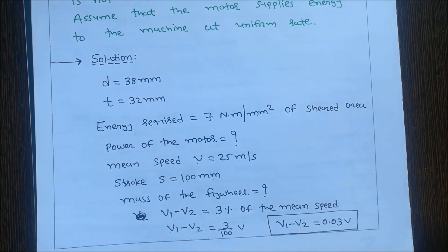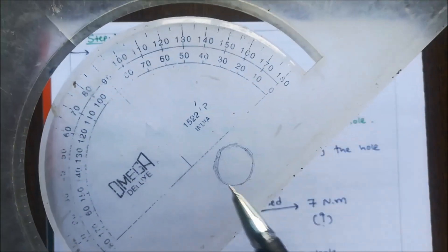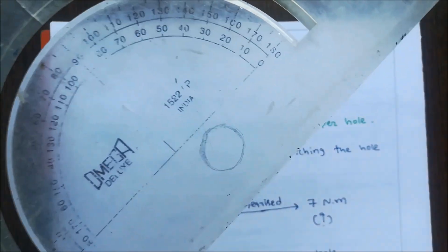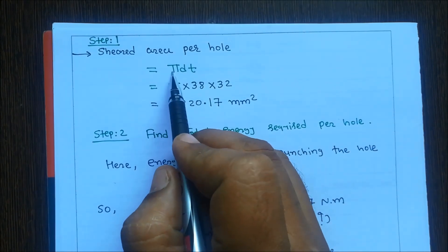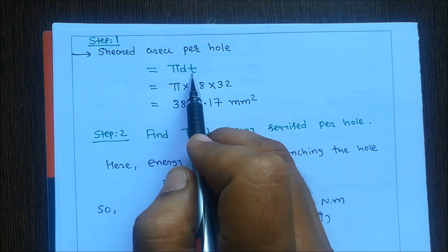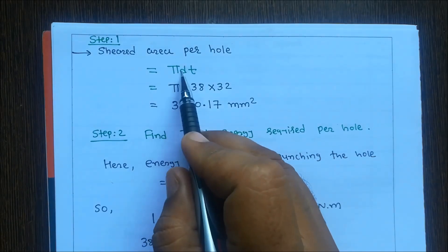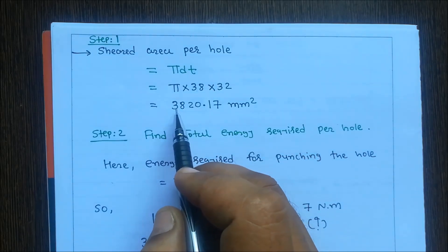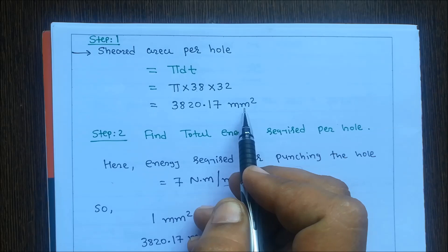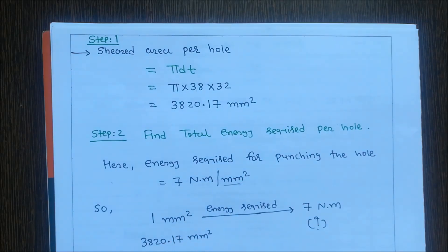Step 1: Find the shear area per hole. Consider a plate — if we punch a hole, the shear area is the circumference of the circle multiplied by the thickness of the plate: shear area = π × d × t = π × 38 × 32 = 3820.17 mm².